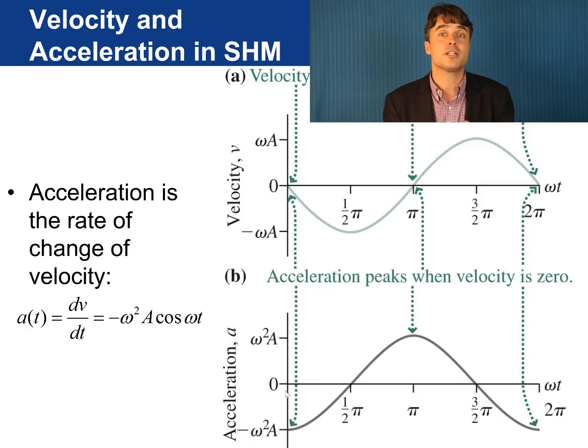The acceleration goes to zero every time the mass passes equilibrium. Again, because the net force on the mass goes to zero when the spring is at equilibrium. Then, when the mass is at its leftmost position, the acceleration is at its maximum value towards the right. This occurs when omega times t is pi.